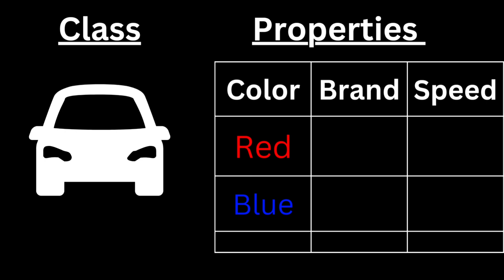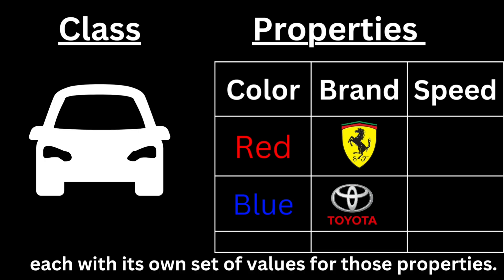Imagine a class called Car. It has properties like color, brand, and speed. You can create multiple car objects like a red Ferrari or a blue Toyota, each with its own set of values for those properties.